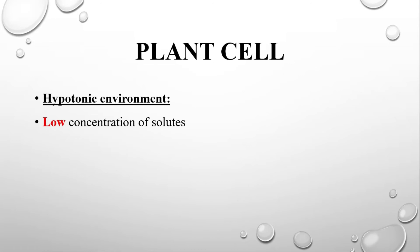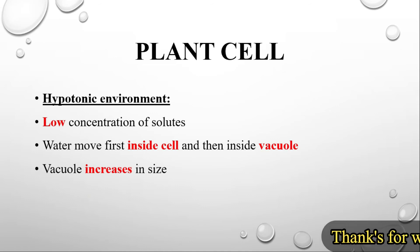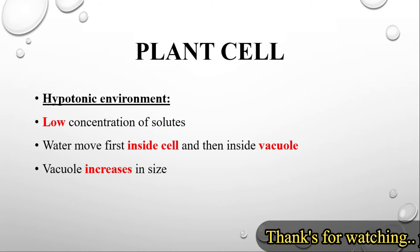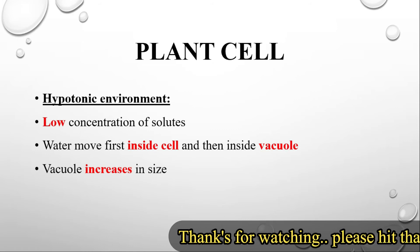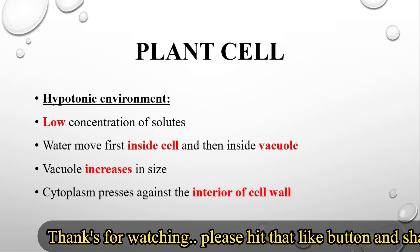In a hypotonic condition, there is low solute concentration outside the cell and higher concentration inside. So water will move inside the cell. Water moves first into the cytoplasm and then into the vacuole. The plant cell has a large vacuole which welcomes water. As water enters, the vacuole increases in size, and consequently the cell increases in size.